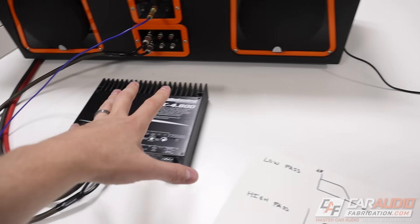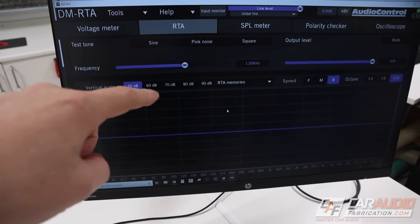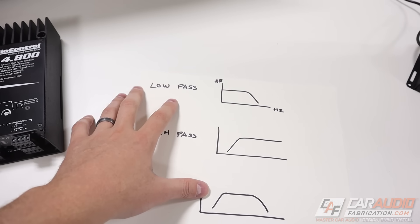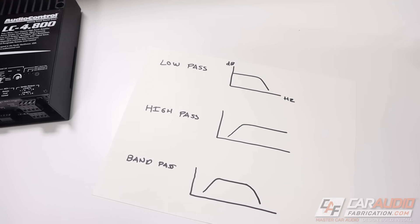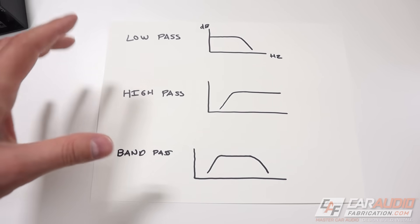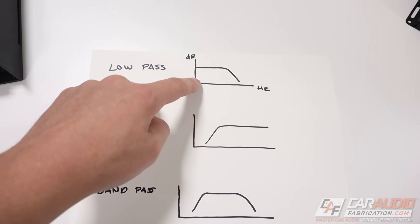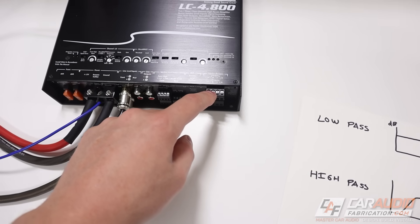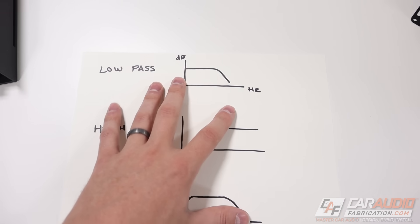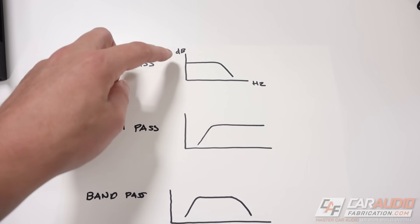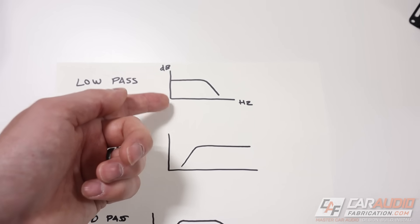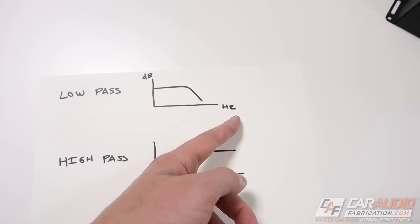I've got everything set up here for a good test setup — I'll explain all of this in a moment. First, I want to talk about crossover terminology to make sure we're all on the same page. There are three main types of crossover. A crossover limits the frequencies coming out of our amplifier and going to our speakers at a certain point. The best way to look at the different types is on a graph, with hertz on the frequency axis.